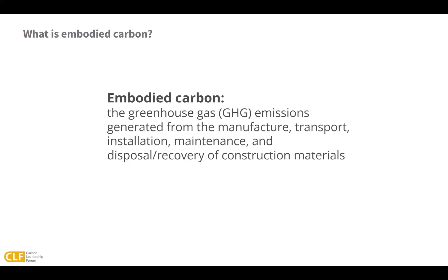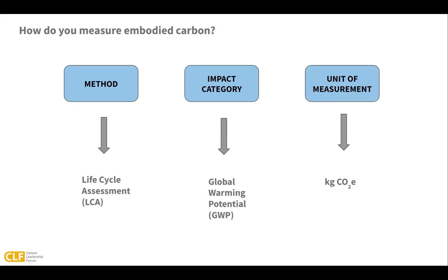Embodied carbon is defined as the greenhouse gas emissions generated from the manufacture, transport, installation, maintenance, and disposal or recovery of construction materials. We measure embodied carbon using a method called life cycle assessment, or LCA, at the material and project scale. Embodied carbon is reported using an impact category called global warming potential, or GWP, and is measured in units of kilograms of carbon dioxide equivalents. The next training module on life cycle assessment will cover this content in more detail.